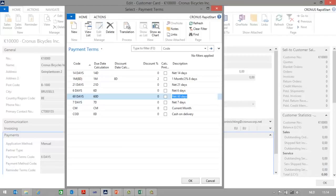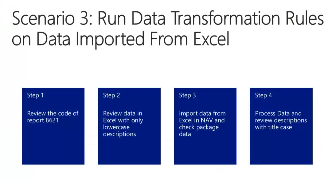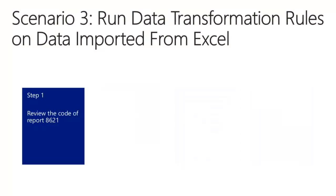In the third scenario of this How Do I video, I will run data transformation rules on data imported from Excel. I will do this by first reviewing the code of report 8621, then reviewing the data in Excel with only lowercase descriptions, importing data from Excel in NAV and checking the package data, and then processing the data and reviewing descriptions with title case. Microsoft Dynamics NAV provides a library of data transformation methods which you can use to create standard data processing rules and run those on the data you import. You can, for example, capitalize all letters, replace part of a string with another string, change date format, trim values, and so on.